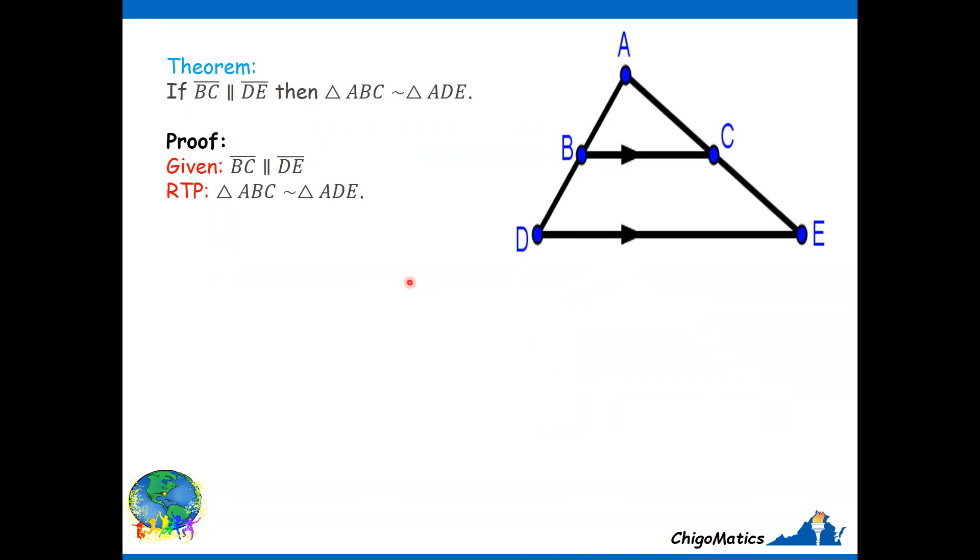The given is we are given the parallel line, so we need to show that the two triangles are similar. With that, we need to recall the test for similar triangles, and those tests are AA, SAS, and SSS.